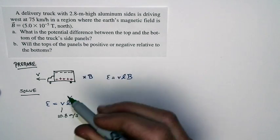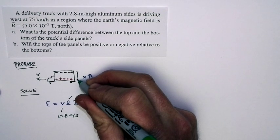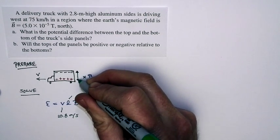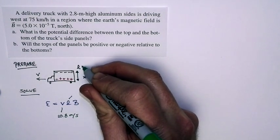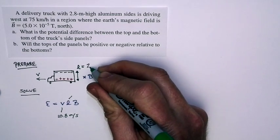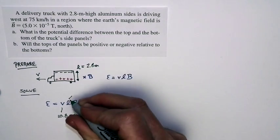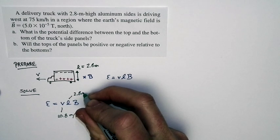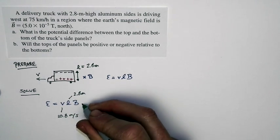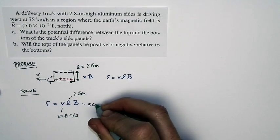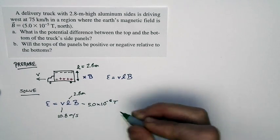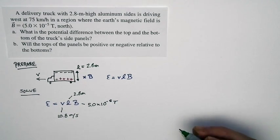L is the length of the conductor. Well, that's this length right here. That's L. And we're told that the truck has sides that are 2.8 meters high. So this length is just 2.8 meters. B is the magnitude of the magnetic field. That's 5.0 times 10 to the minus fifth Tesla. That's just the strength of the Earth's magnetic field.